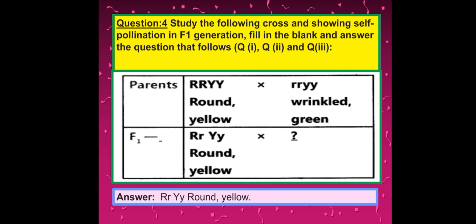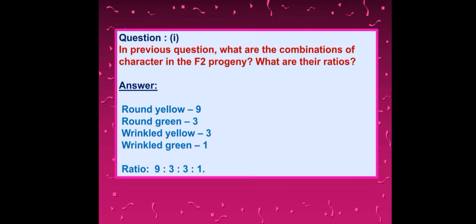In F1 generation, self-pollination is made, so the genotype in the next generation is RrYy, and the phenotype is round and yellow. In the F2 progeny from this dihybrid cross, four different types of combinations or phenotypes were obtained: round yellow, round green, wrinkled yellow, and wrinkled green. These combinations were obtained in the ratio of 9:3:3:1.